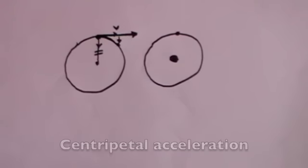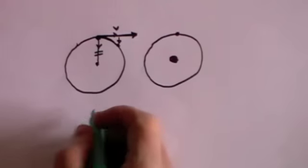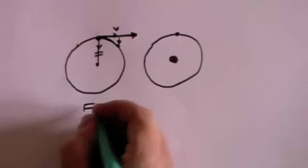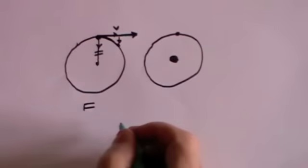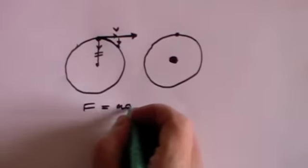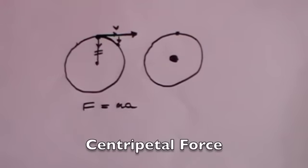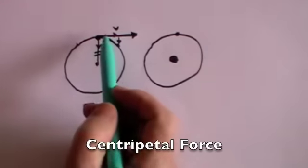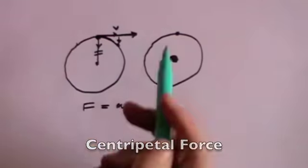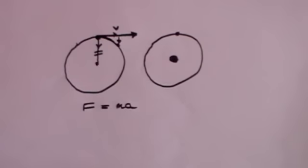If you have an acceleration, then because of Newton's second law — which tells us that force is mass times acceleration — the centripetal force will be the mass of the ball multiplied by the centripetal acceleration. We'll work out what that acceleration is later.